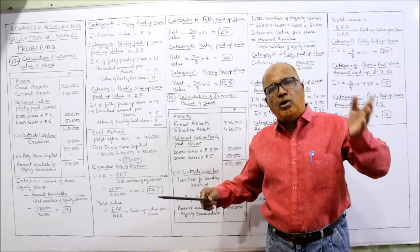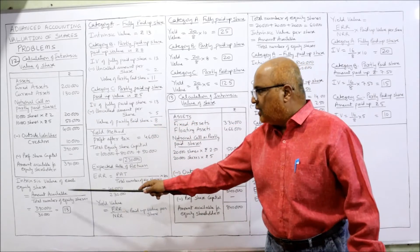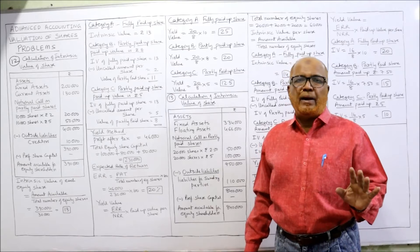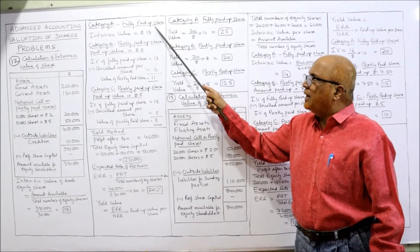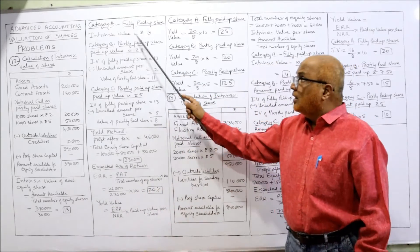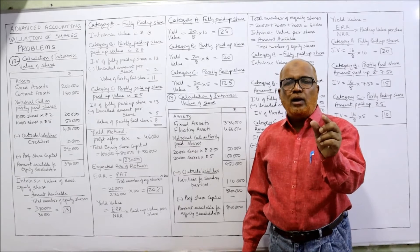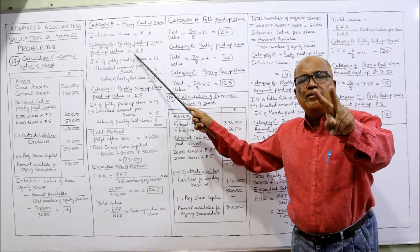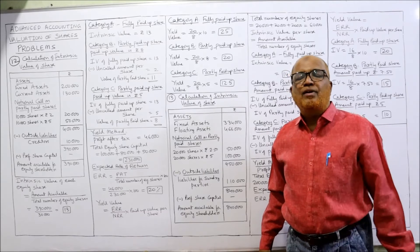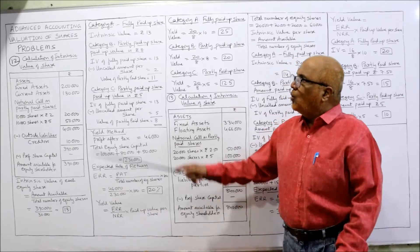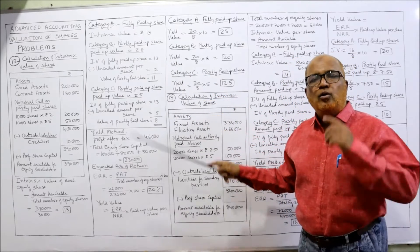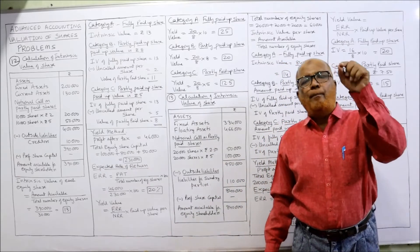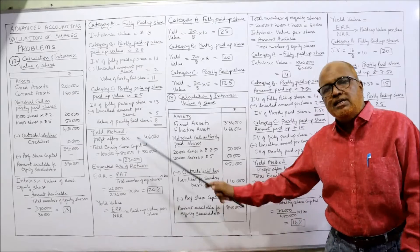We have converted the partly paid shares to fully paid by notional call. So 3 lakh 90,000 divided by 30,000 = 13 rupees. So 13 rupees is the intrinsic value of the fully called and paid up share — Category A. For Category B, partly called and paid up share on which 8 rupees are paid up, the uncalled amount is 2 rupees. We deduct 2 rupees from the intrinsic value of the fully paid up share: 13 minus 2 = 11 rupees.